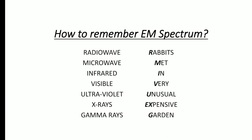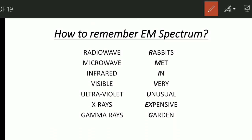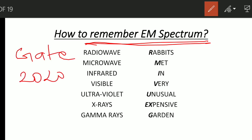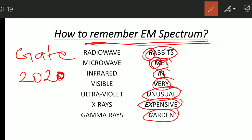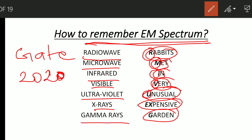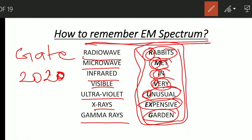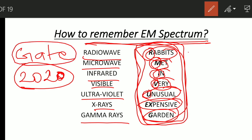To remember the EM spectrum, there was a direct question in GATE 2020 asking about increasing wavelength or frequency. You can remember the EM spectrum with the mnemonic: 'Rabbits Met In A Very Unusual Expensive Garden' — the bold letters stand for Radio waves, Microwaves, Infrared, Visible, Ultraviolet, X-rays, and Gamma rays. This will be easy to remember and useful for exam questions.